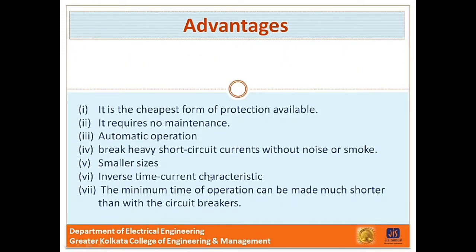What are the advantages of using a fuse? First, it is the cheapest form of protection available. It requires no maintenance. Its operation is inherently completely automatic, unlike a circuit breaker which requires elaborate equipment for automatic action. It can break heavy short circuit currents without noise or smoke. The smaller size of a fuse imposes a current-limiting effect under short circuit conditions. The inverse time characteristics make it suitable for overcurrent protection. And the minimum time of operation can be made much shorter than with a circuit breaker.